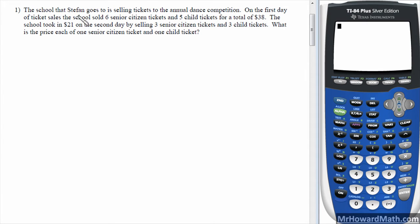So it says, the school that Stephon goes to is selling tickets to the annual dance competition. On the first day of ticket sales, the school sold six senior citizen tickets and five child tickets for a total of $38. Then, the school took in $21 on the second day by selling three senior citizen tickets and three child tickets. What is the price of each one senior citizen ticket and child ticket?